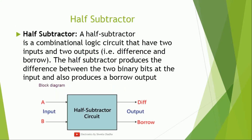A half subtractor is a device which is used to subtract two bits. Let us assume A and B are two inputs, that is two bits. The outputs that we are going to get are difference and borrow. So a half subtractor is a device which subtracts two bits.